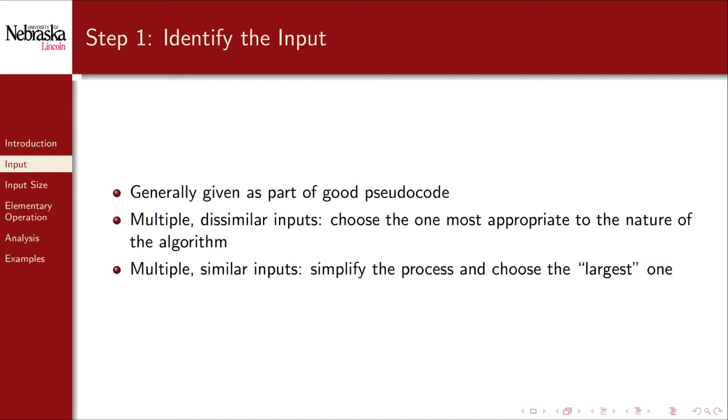The first step is relatively easy. Identifying the input is trivial if you've written good pseudocode. However there are some corner cases that you may have to deal with. In particular if an algorithm has multiple inputs, say two collections or two numbers, do we count both? In general we want to simplify our analysis. In the case where there are multiple dissimilar inputs, we will choose to focus on the most appropriate to the algorithm. In the case where there are multiple similar inputs, we'll focus on the larger one.